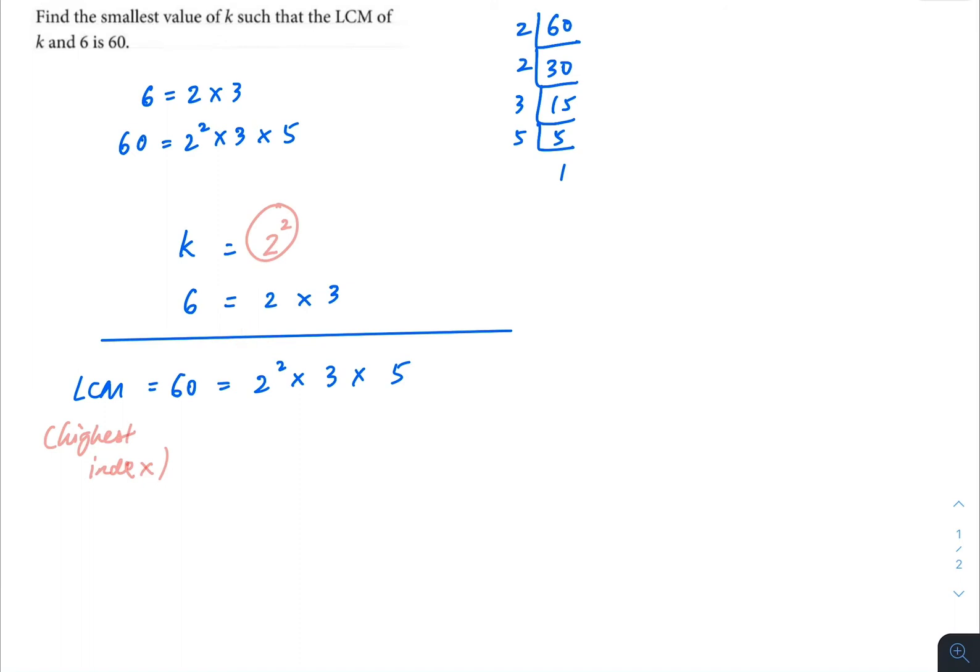Now next, for 3, it will come from 6, and we will leave it like that first. Now for 5, 6 does not have 5 as its prime factor, but we need 5 for the LCM. So that's why we need the 5 for k.